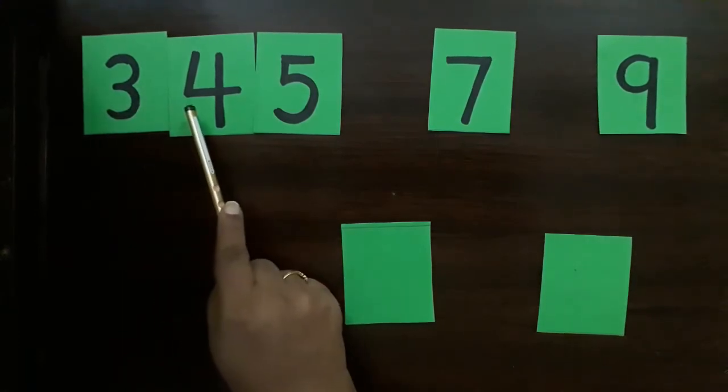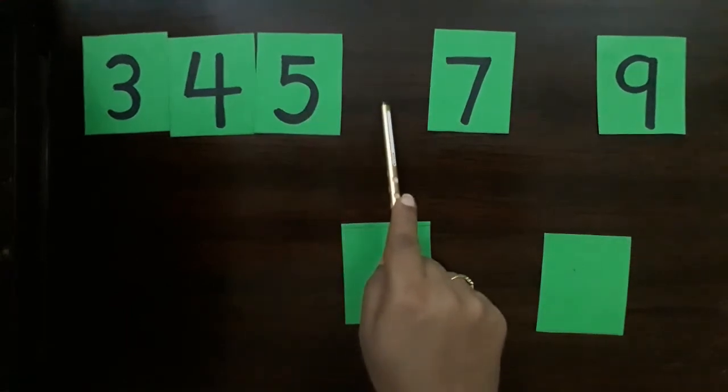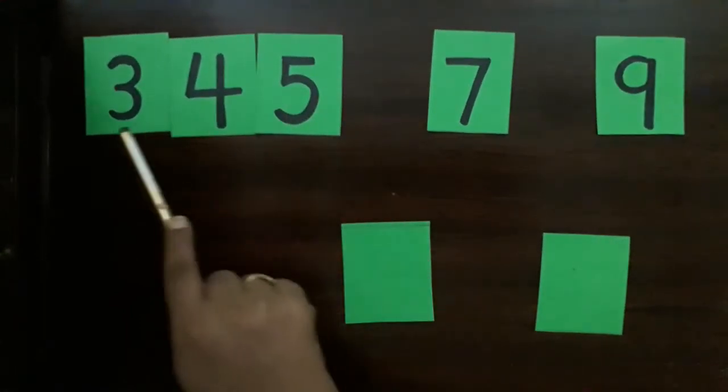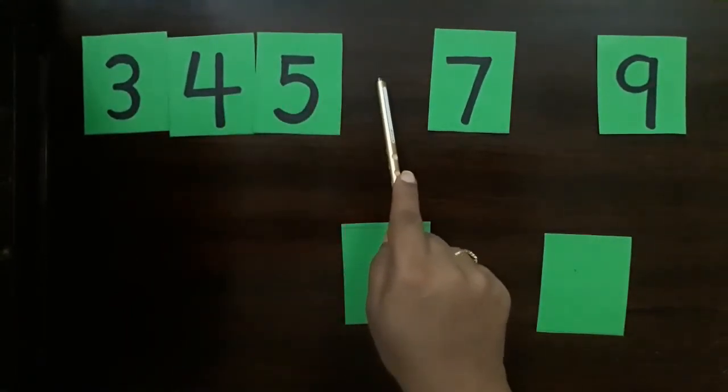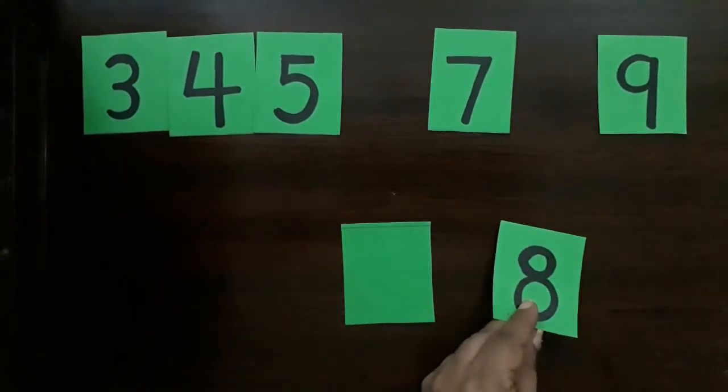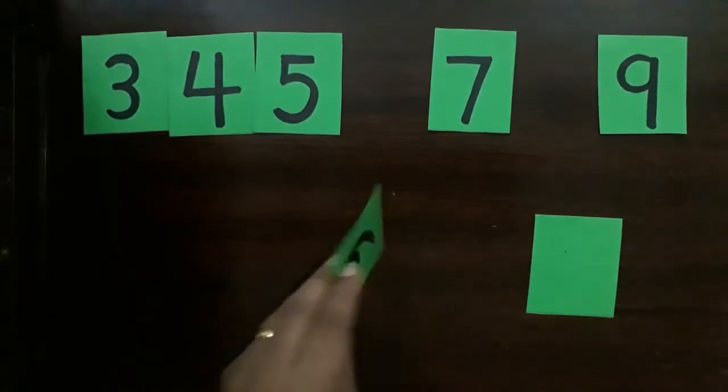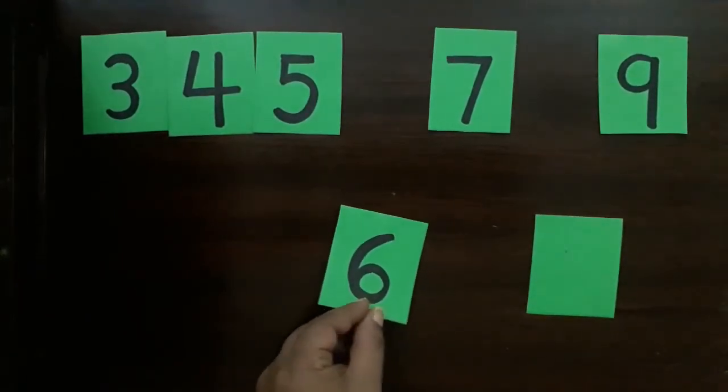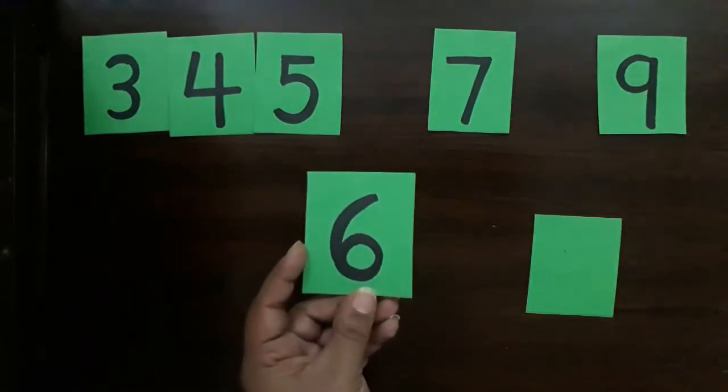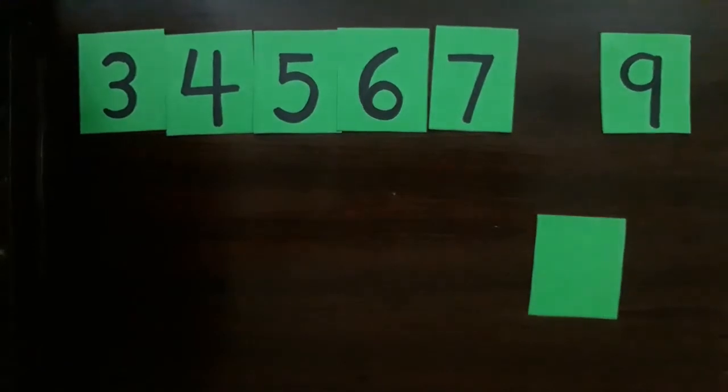What comes after 5? 3, 4, 5, 6. Which one is 6? Where are you? Peekaboo! I found you! This is number 6, so 6 will come here and make the number order.